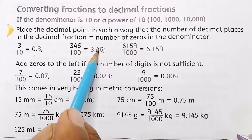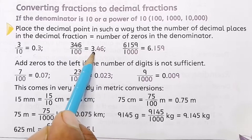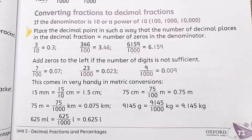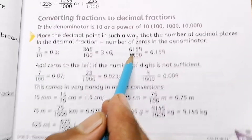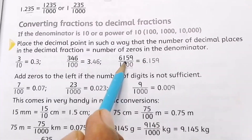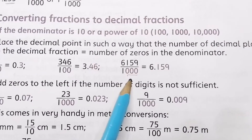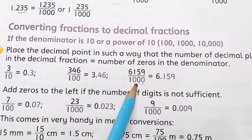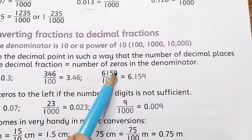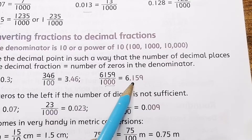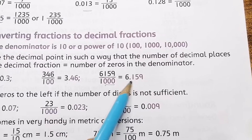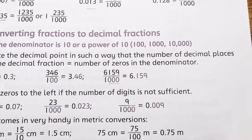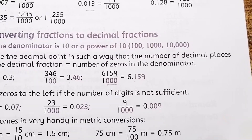For 6159/1000, there are three zeros, so you count one, two, three from the right and place the decimal after three digits. Similarly, more examples are given that follow the same pattern.